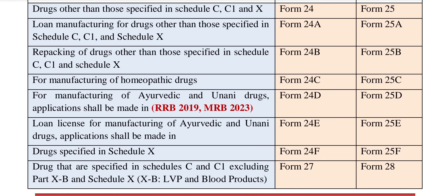Next, for the manufacturing of homeopathic drugs — homeopathic drugs are homeo. Homeopathic drugs: you can tell C. Home is C. Manufacturing is Form 24. So for manufacturing homeopathic drugs, homeo is home and CU. So it is C. You can correlate homeopathic with CU. So Form 24C is the application form for manufacturing homeopathic drugs, and Form 25 (additional) corresponds to license.